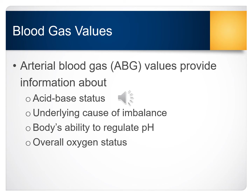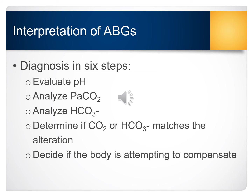Understanding and being able to evaluate your patient's arterial blood gases is very important. This can provide information to determine which acid-base imbalance your patient may be having. It can also let you know when assessing your patient their ability to regulate their own pH, and it can give you an idea of their overall oxygenation status.